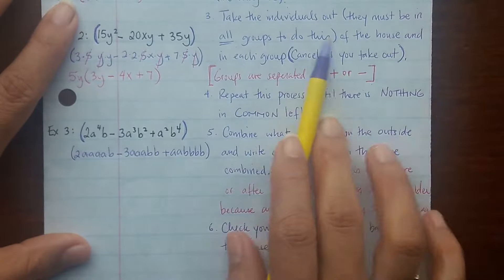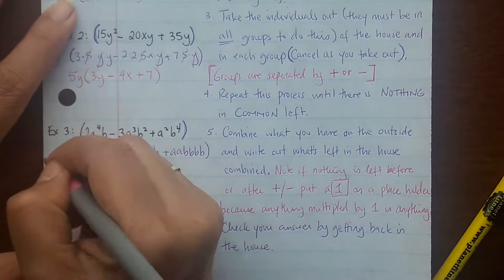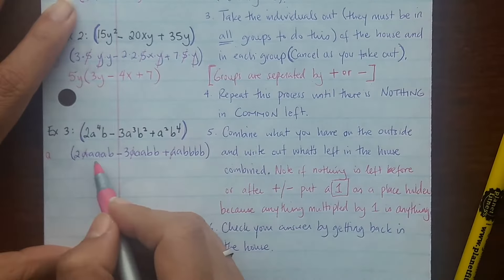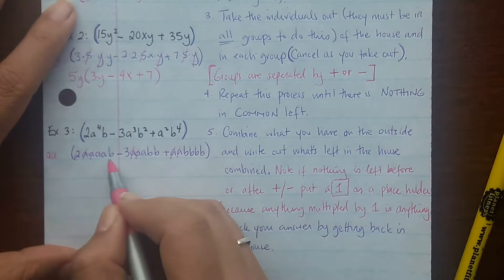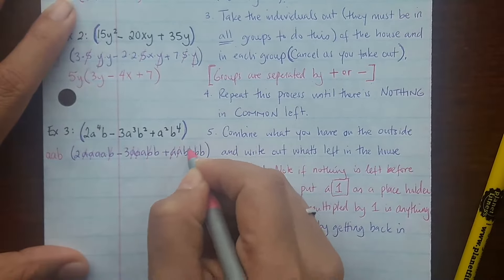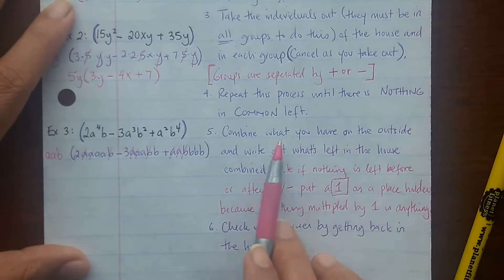Alright, so let's take the individuals out, making sure they're in every group. So they have to be in every group. Number-wise I can't take anything out, but I can take out an a. What else can I take out? I can take out another a. Cross them out as you go. I can take out a b. Cross them out as you go, and you can see that there's nothing in common in all 3 groups. So then I'm done.